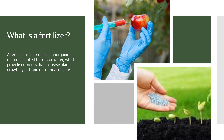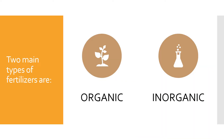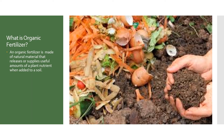Let's look more into what exactly are organic and inorganic materials that we use as fertilizers. There are two types: organic, which is natural, and inorganic, which is mostly artificial or chemical fertilizers. Let's look at what organic fertilizers are first.